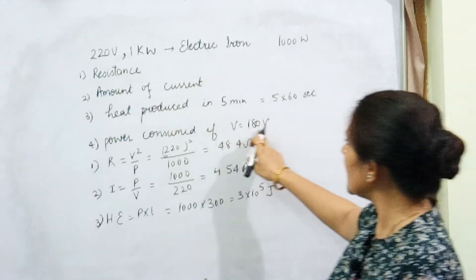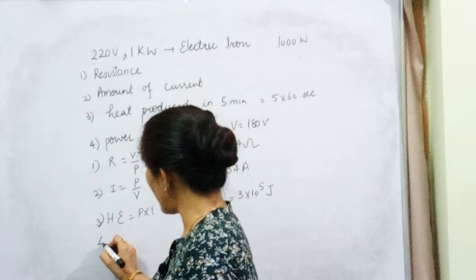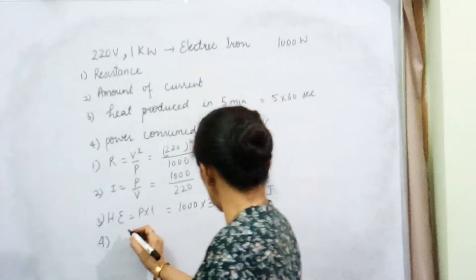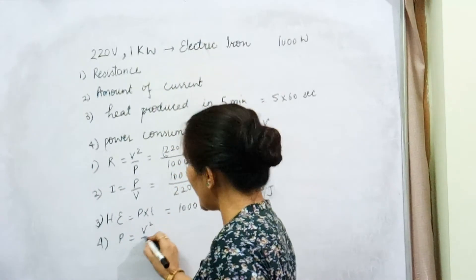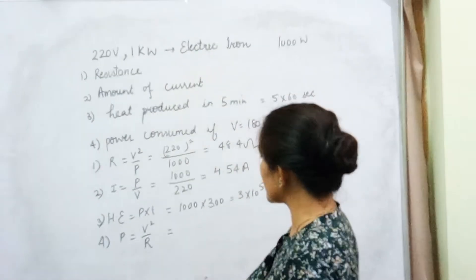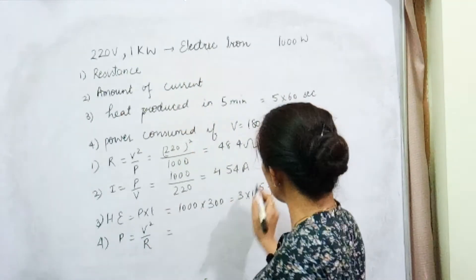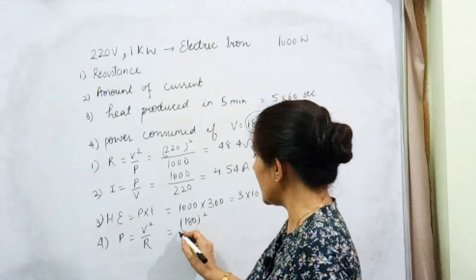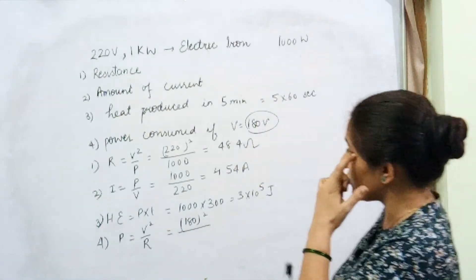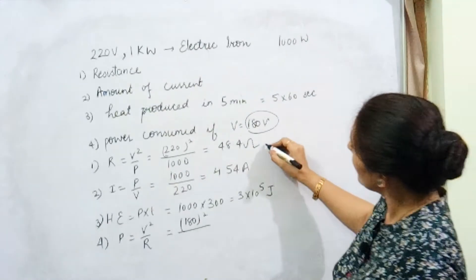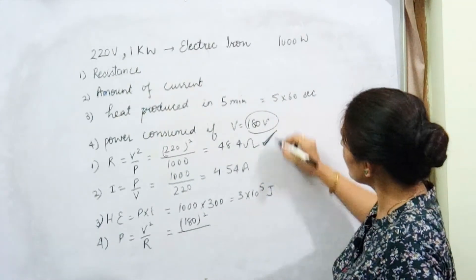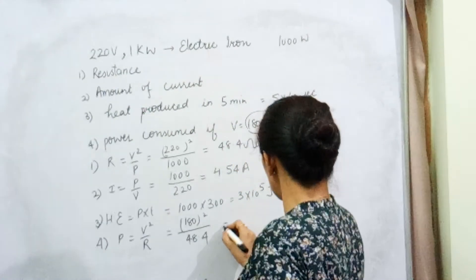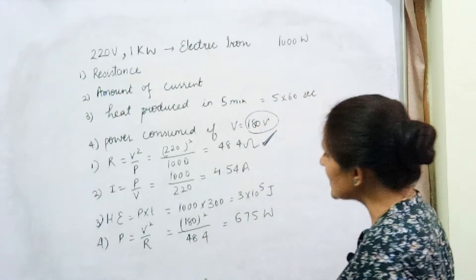That is our third part. The fourth part: what is the power consumed if V is 180 volt instead of 220 volt? Power can be calculated as P = V²/R. Now V is 180, and the resistance remains the same as we calculated in the first part — which is 48.4 ohm, because it is the same heating element. P = 180² / 48.4 = 675 watt.